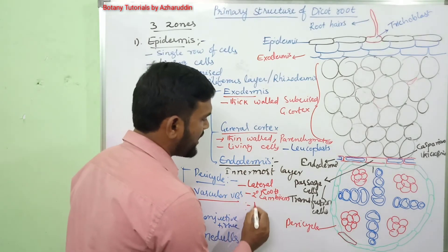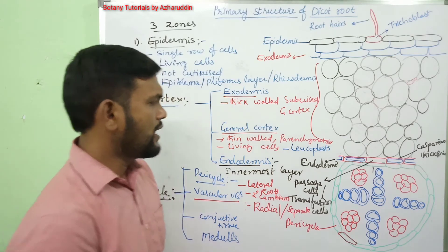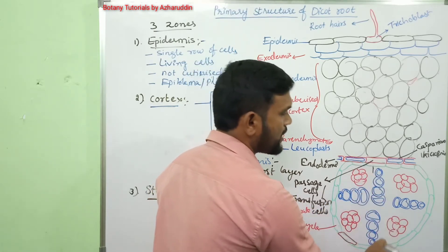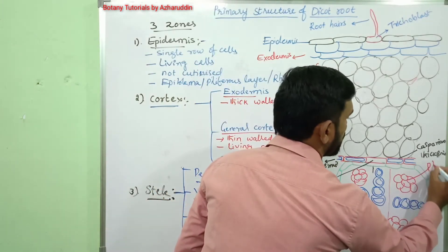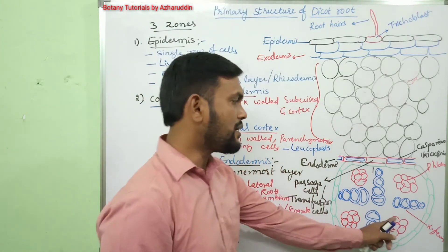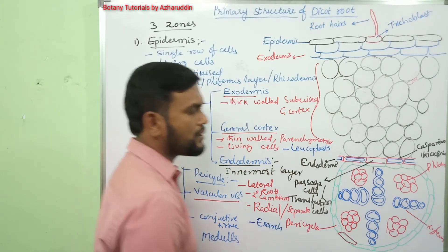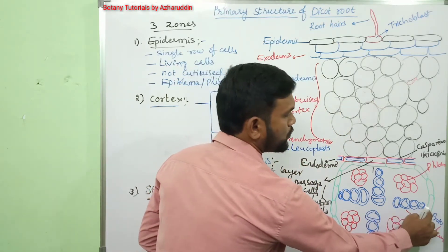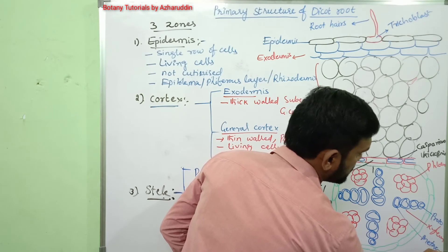Vascular bundles are radial — meaning xylem and phloem are separate and alternating with one another; they are not present on the same radius. The xylem is exarch, meaning protoxylem elements are directed towards the pericycle, and metaxylem elements are directed towards the medulla or pith.